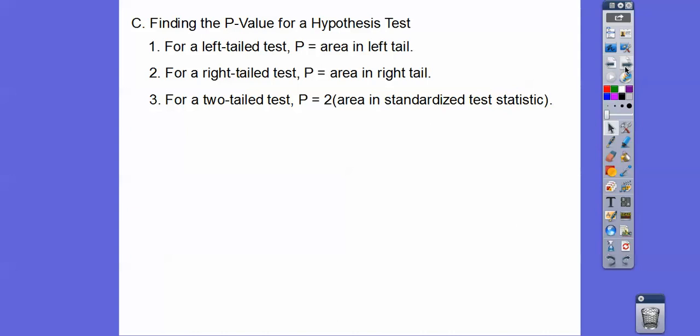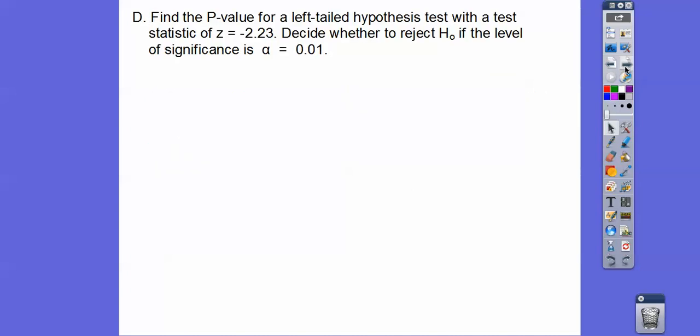So for a two-tailed test, it's going to be twice the area of your test statistics. So the lower the p-value, the more evidence there is in favor of rejecting our null.